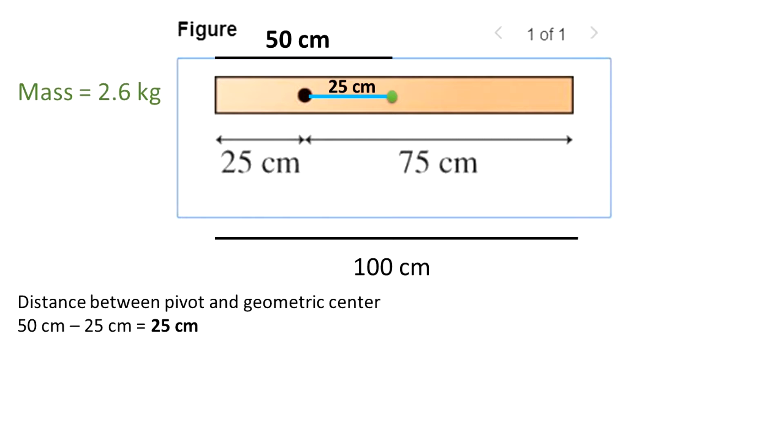25 cm is the distance between the pivot and the place where gravity acts. Now let's convert 25 cm to meters, because we are using the international unit system. We have that 25 cm is equal to 0.25 meters.